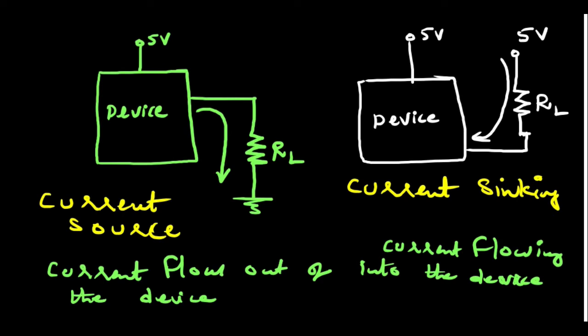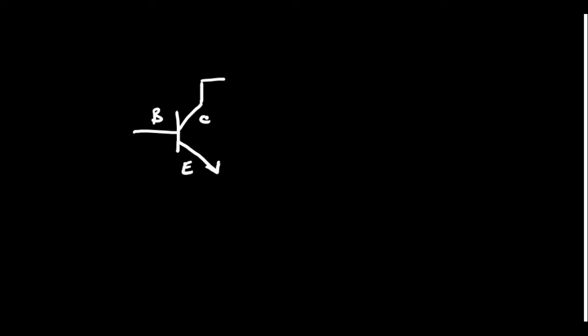Let's see how the transistor acts as a current sinking device. We have the transistor — we want to use this as a current sinking device. It has base, collector, and emitter. The emitter I will connect to ground, and to the base I am going to give the input signal. To use this NPN transistor as a switch, at the input we need a high-going pulse.